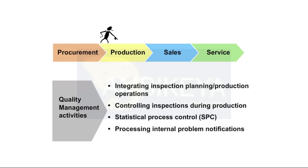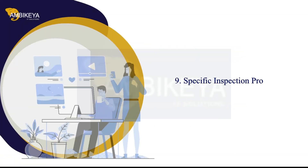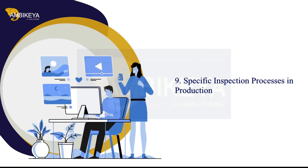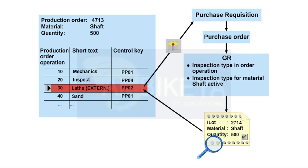Inspections during production are controlled using the inspection operations that are contained in the routing or the master recipe. When operations are processed externally, you inspect the materials upon their return in a goods receipt inspection. The operations are identified by corresponding control keys for external processing.